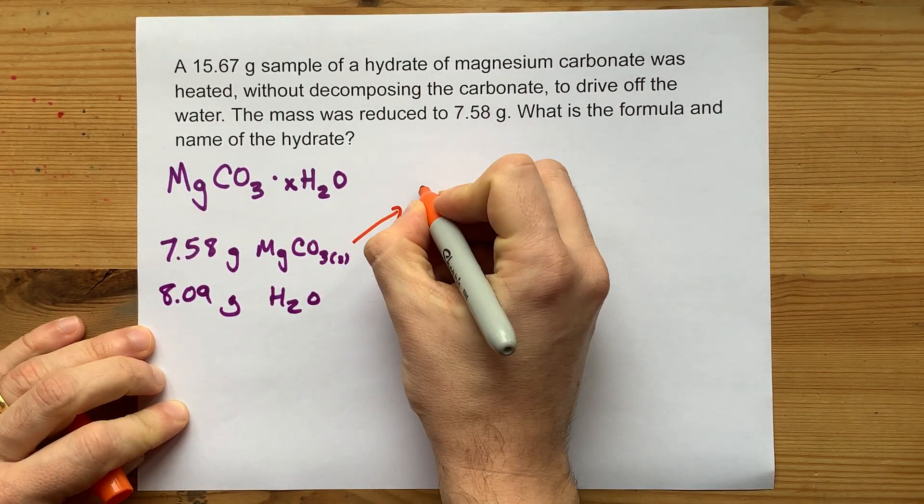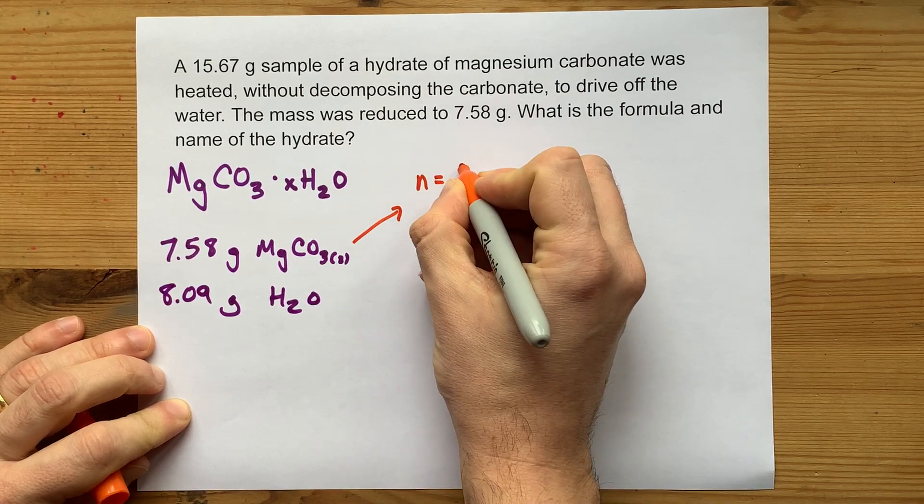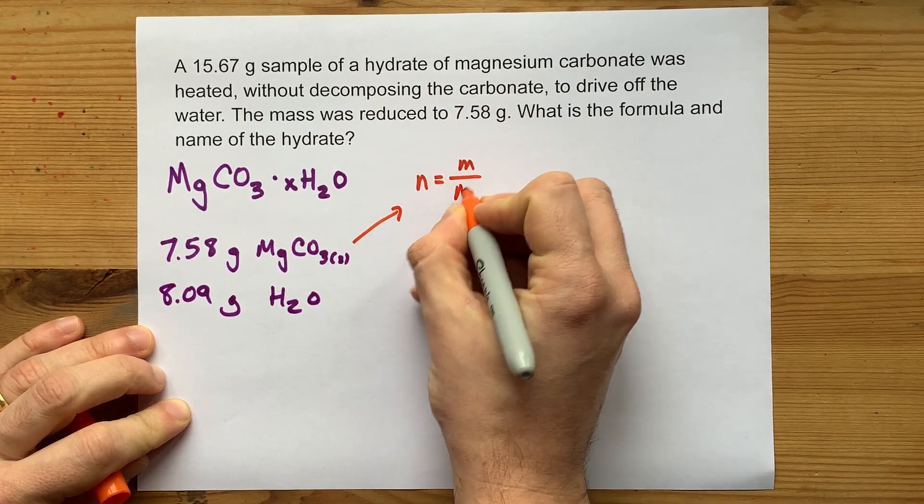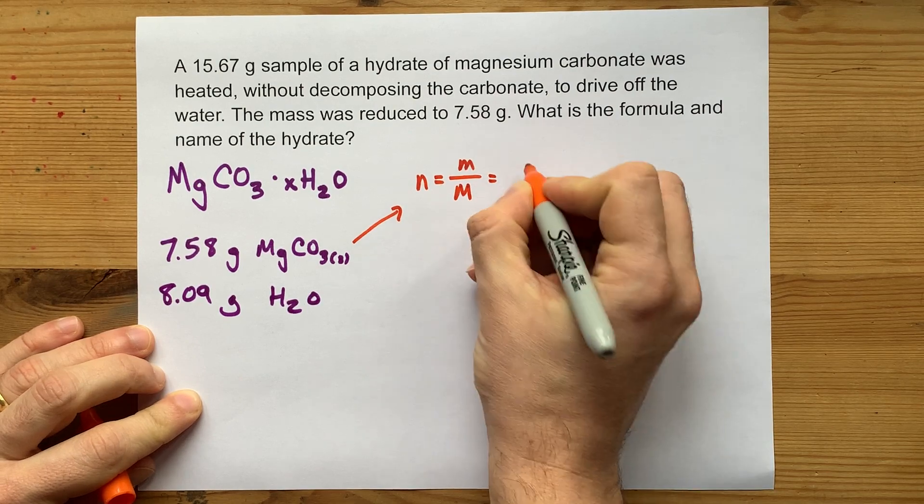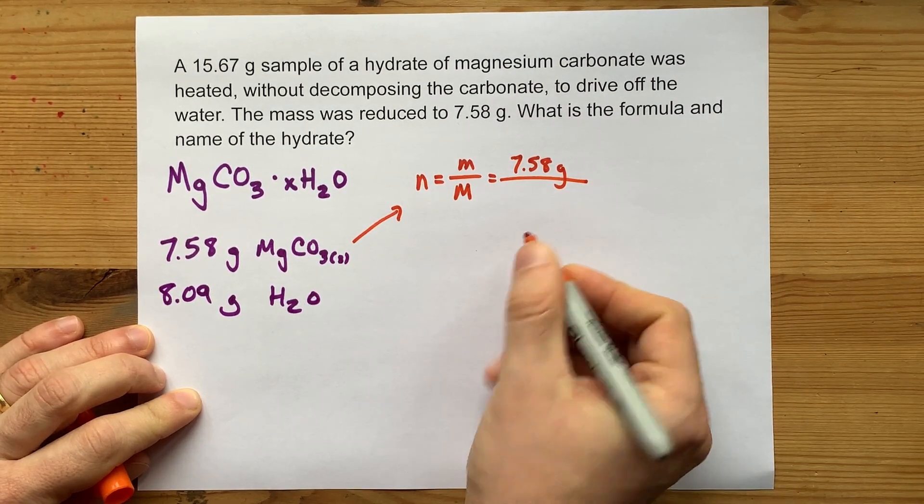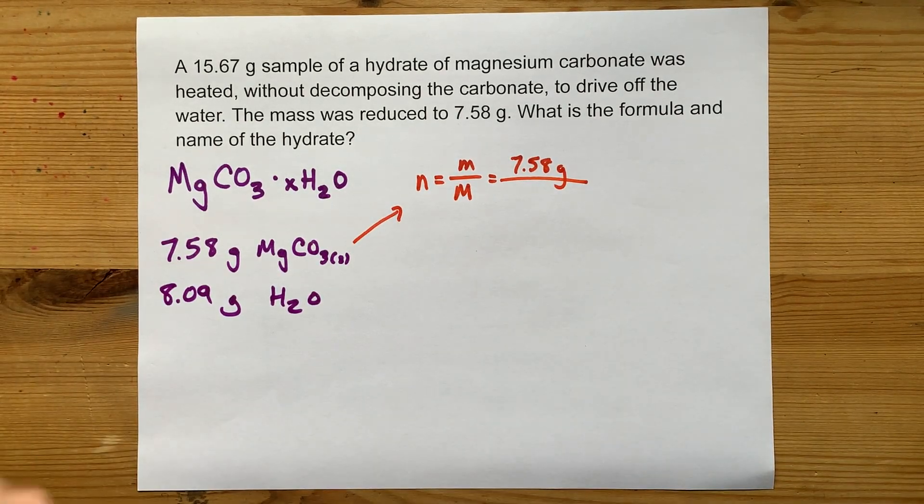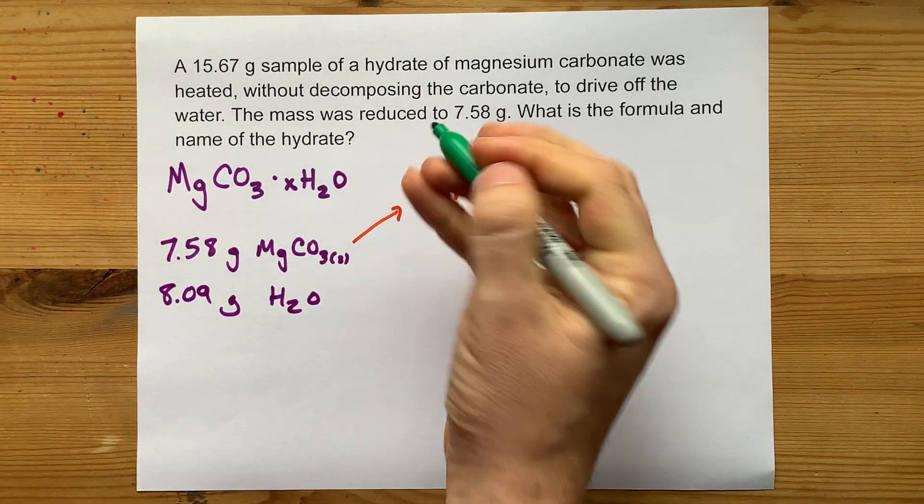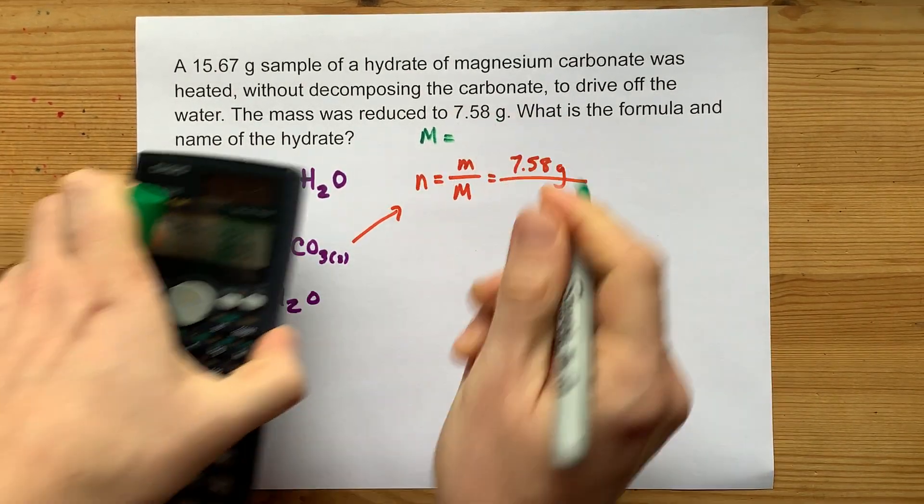For this one, the number of moles, by the way, is always mass divided by molar mass. We have 7.58 grams divided by... oh, actually, I don't even know the molar mass of magnesium carbonate. Let's figure that out.